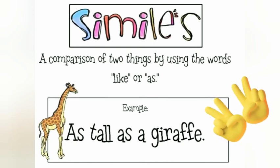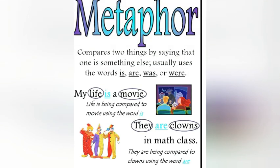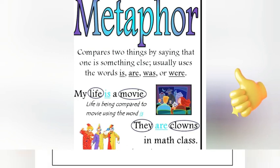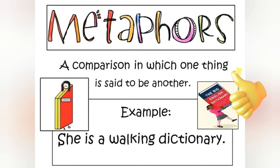In a simile, one thing is said to be like another — two things are compared using 'like' or 'as'. In the simile, we use 'like' or 'as' to compare two things.